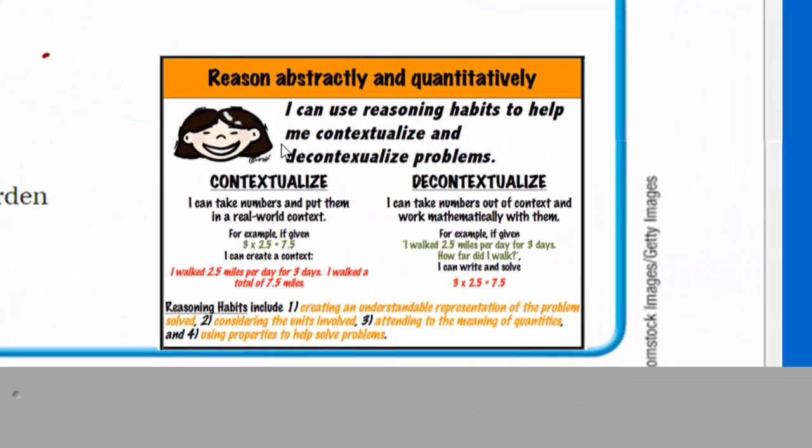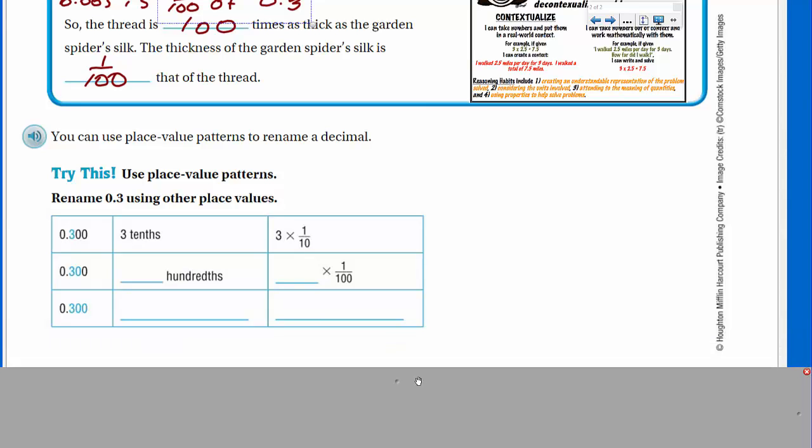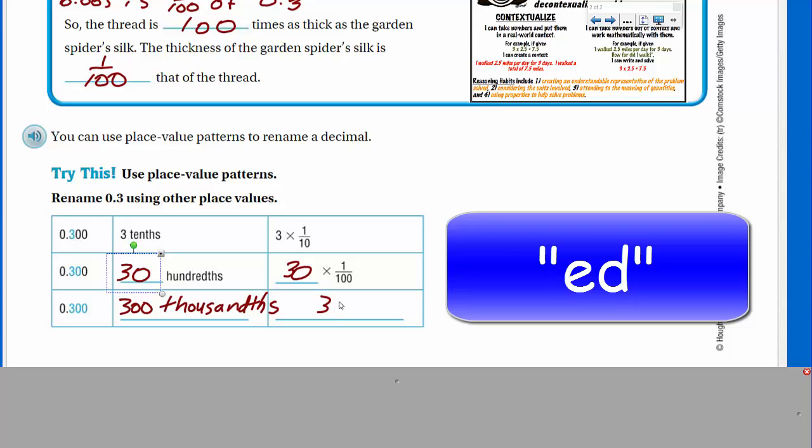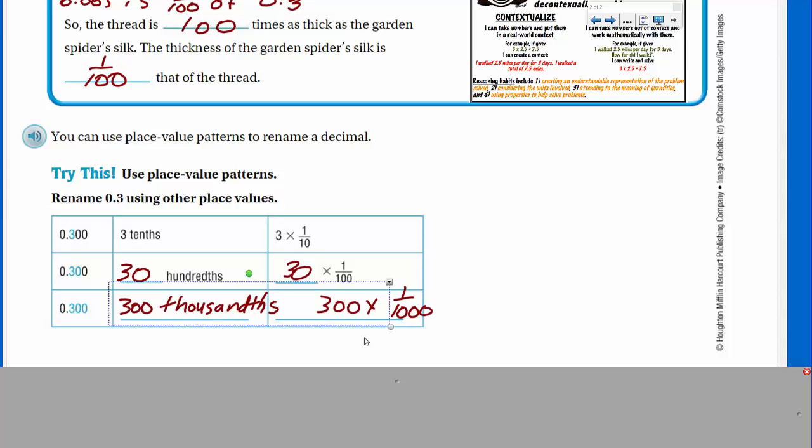You can use place value patterns to rename a decimal. Use place value patterns, rename three tenths using other place values. So, it's written here, three tenths, three times one tenth. Here we have thirty hundredths. Now, thirty hundredths is the same as three tenths. Because there's ten hundredths in each tenth. So, that's why that would make that thirty hundredths. And in this case, we would basically be saying thirty times one-hundredth will equal thirty hundredths. Here, we have three hundred thousandths. And then, of course, we can write that as three hundred times one thousandth.